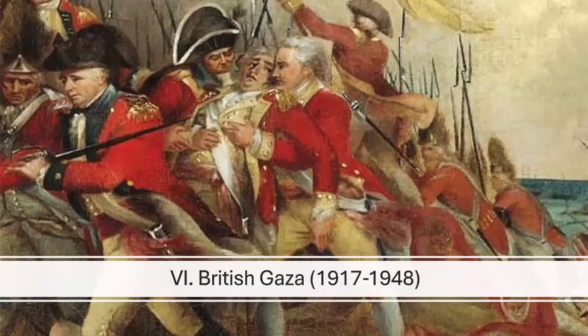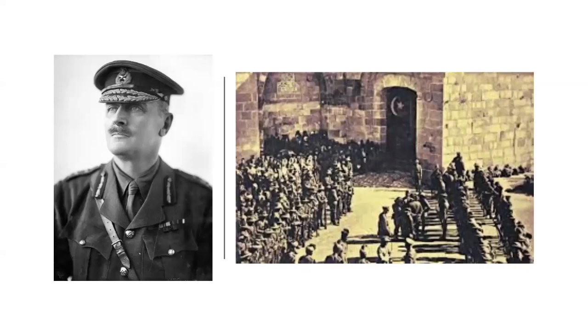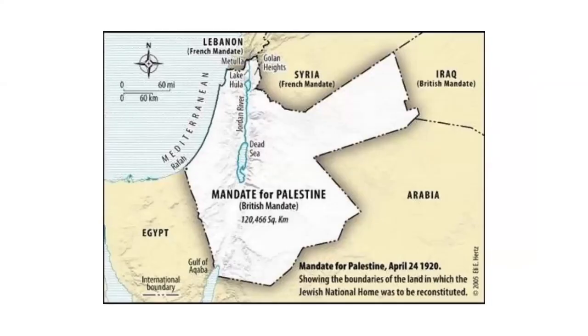British Gaza lasted from 1917 to 1948. On November 7, 1917, British forces captured Gaza during World War I as part of their Sinai-Palestine campaign. General Edmund Allenby's forces outflanked the Ottoman defensive line, leading to the fall of Gaza with relatively little resistance. This period was part of the British Mandate for Palestine, established by the League of Nations, and lasted until the establishment of the State of Israel in 1948.